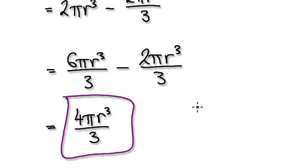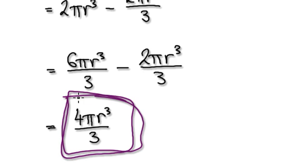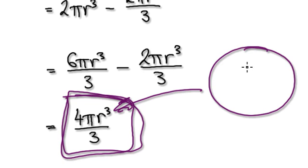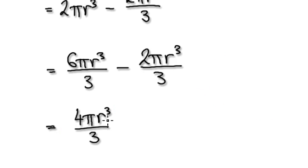So with our newfound method of integration, it gave us the volume as four-thirds pi r cubed, which is consistent with the known formula for the volume of a sphere.